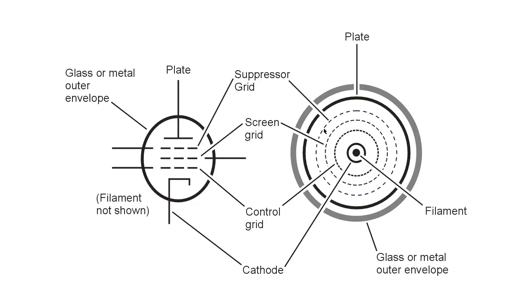The suppressor grid, a still larger screen surrounding that. The plate, a solid metal or in some older tubes even carbon cylinder, or sometimes a finned or jagged structure in the more high-powered vacuum tubes.